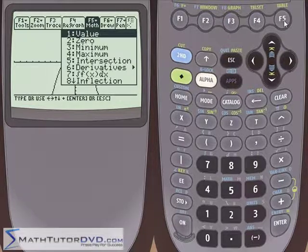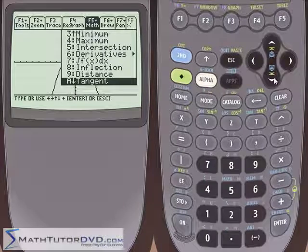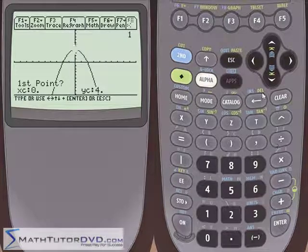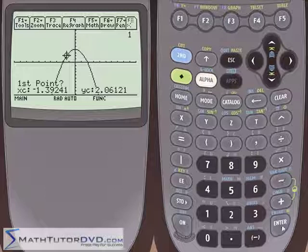So we go into the math menu, we go down below inflection, below distance, below tangent because we've already done that, to arc. So we hit arc and it's asking us for a first point and second point like normal. So we hit enter.